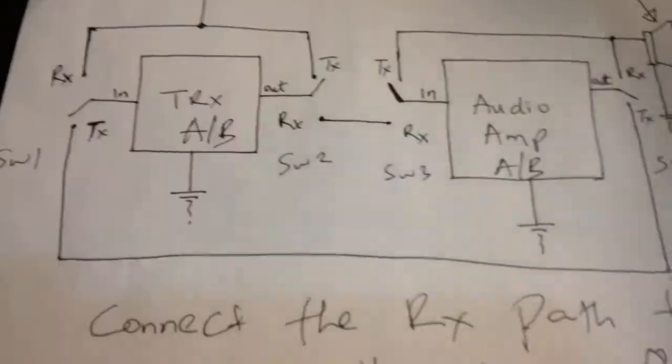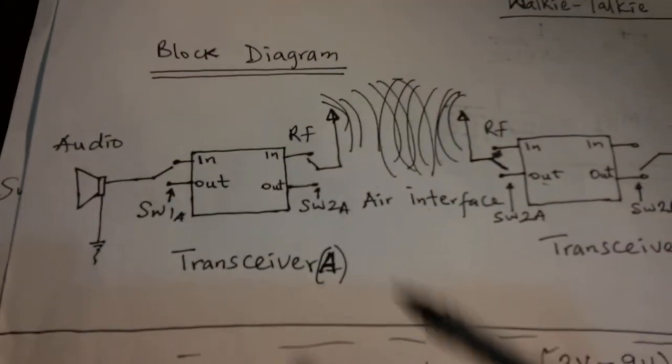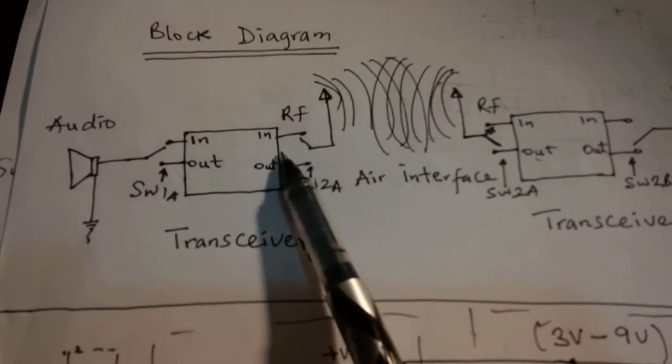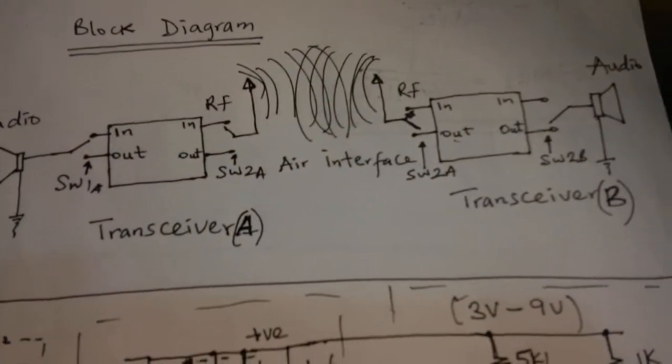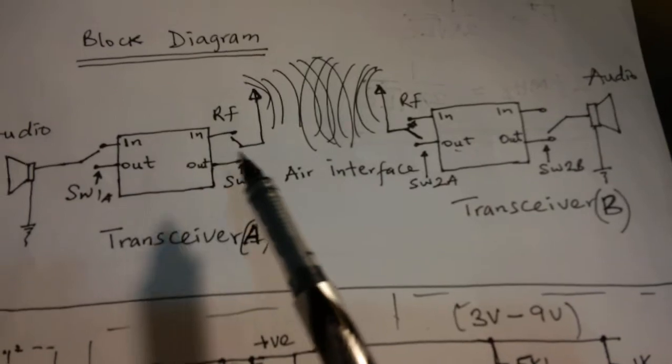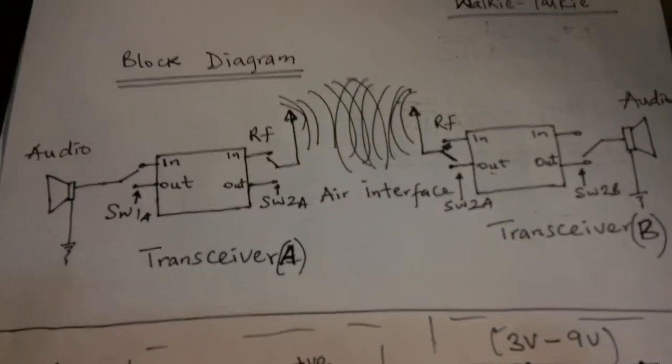Remember, you have to build everything in duplicate. You have to build the transceiver A and transceiver B as duplicates. And then by default, it should allow your system to be in the receive path always.